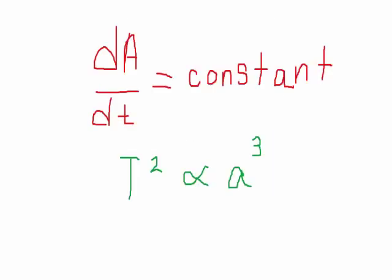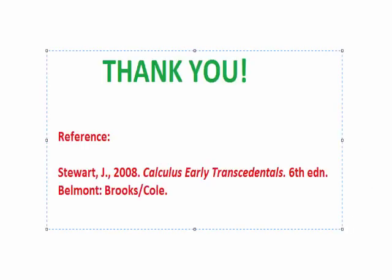That concludes our proof of Kepler's second and third laws. We have shown that the line joining a planet to the sun sweeps out equal areas in equal times, and that the square of the period of revolution of a planet is proportional to the cube of the length of its major axis. Here is the reference to the textbook that was used for some of the equations in this video. Thanks for watching! I hope you enjoyed!